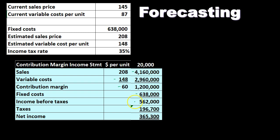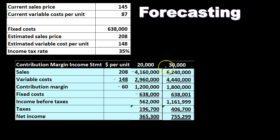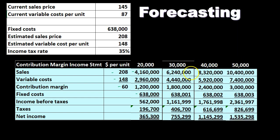Fixed costs remain the same and this all calculates out. Right next to it we could put 30,000 units: 208 times 30,000 is 6,240,000; 148 times 30,000 is 4,440,000; 60 times 30,000 is 1,800,000. Then we can say what would happen at 40,000, at 50,000, and break these out very easily. You can see how this setup gives us a nice picture of forecasting very quickly with minimal changes, as opposed to a standard income statement budgeted forward without costs broken out by their fixed or variable behavior.